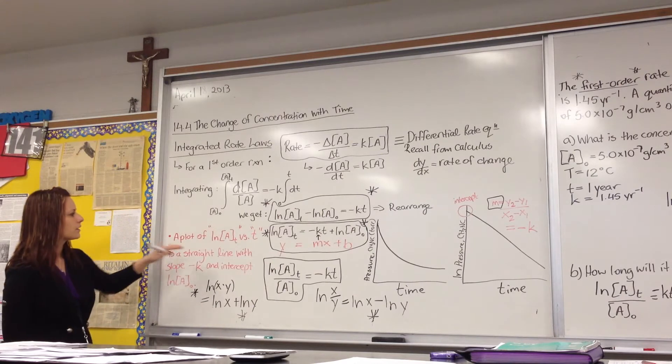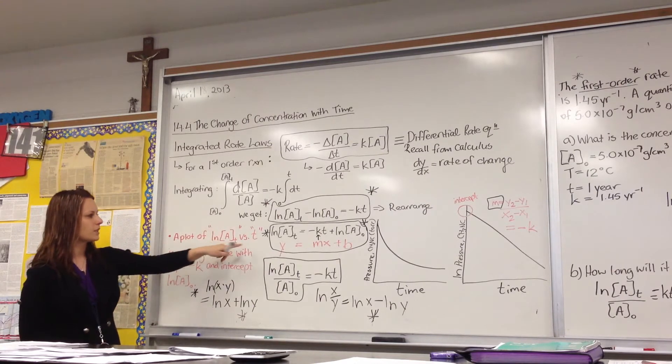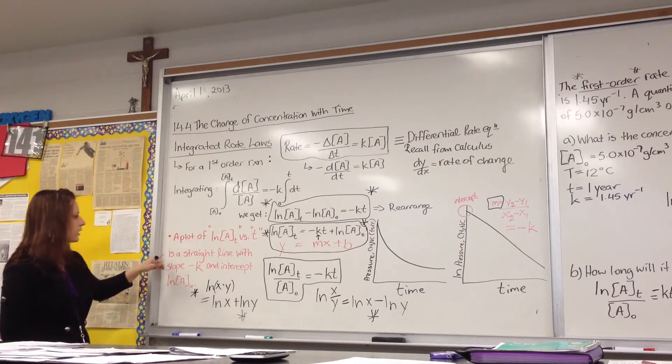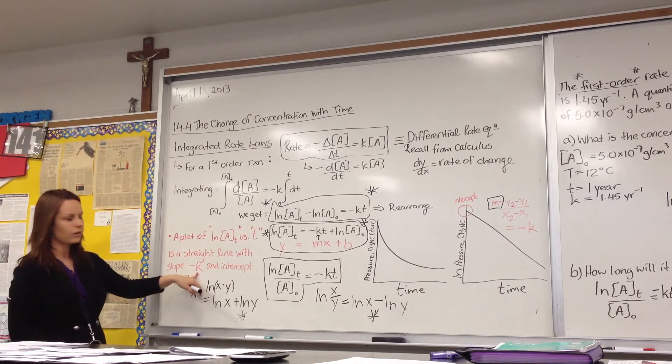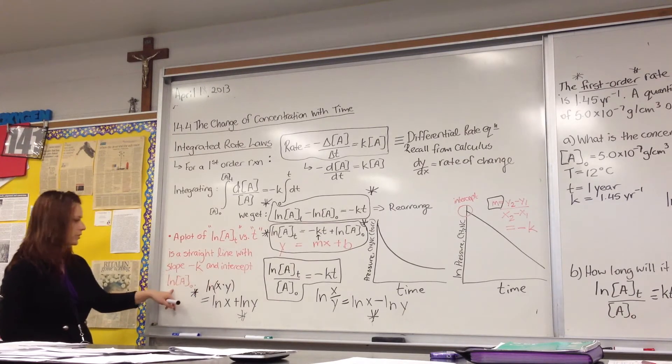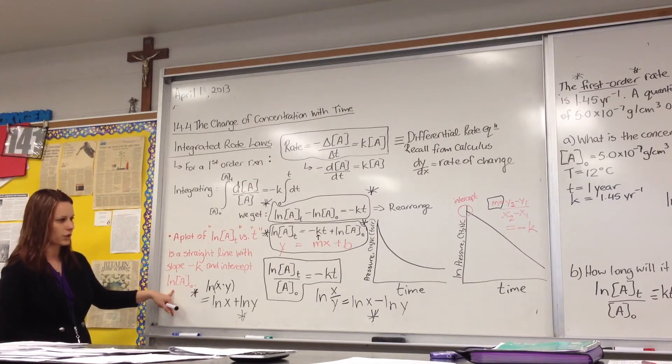If you plot the ln of A at time T versus T, you get a straight line with a slope of your negative K, and your intercept is the ln of the initial A concentration.